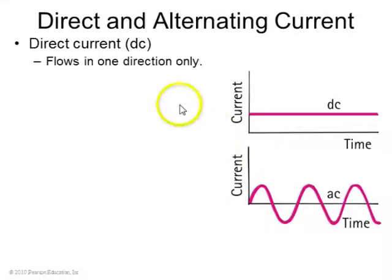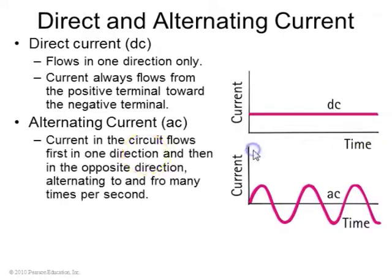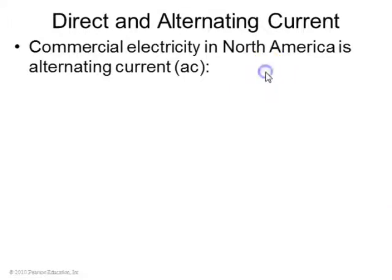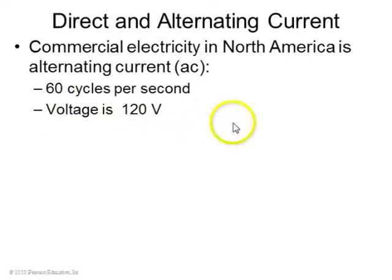DC versus AC: direct current means that the current is flowing through a wire in one direction only, from the plus to the minus terminal. Alternating current is when the current is going back and forth with time. This is accomplished by alternating the polarity of the voltage — plus, minus, plus, minus. In North America, all power outlets have 60 hertz, plus to minus, plus to minus, and the voltage is 120 volts.